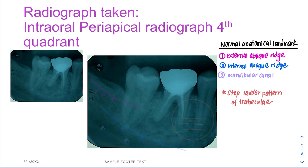Firstly, we interpret the normal anatomical landmarks. The first one is the external oblique ridge. This is a radiographic band which extends from the anterior border of the ramus downward and forward. Next is also a radiographic band which extends downward and forward, and this is known as the internal oblique ridge.